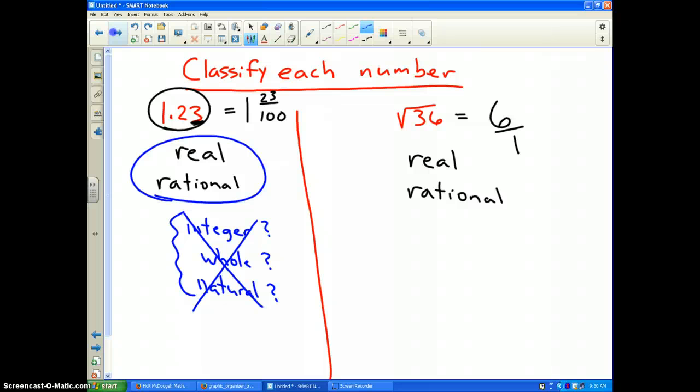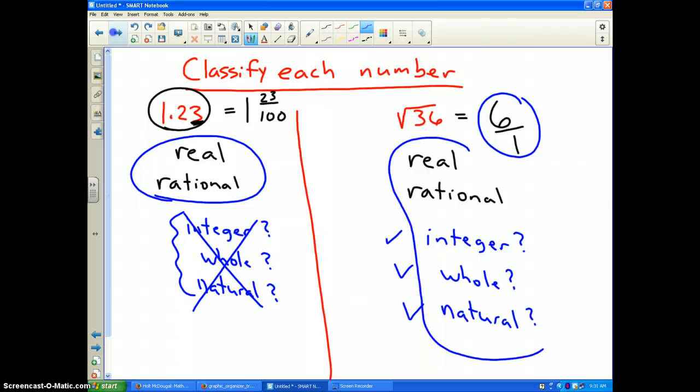Which brings us to the last question. Do any of the special categories apply? Is it an integer? Is it a whole number? Is it a natural number? Well, integers are counting numbers, both positive and negative. 6 is a counting number, so it is an integer. Can you order 6 whole pizzas? Sure you can, so it's a whole number. Is it natural? Well, of course, because natural numbers are all whole numbers. So therefore, this one is natural as well. Therefore, your final answer would be square root of 36 belongs to every one of those number systems: real, rational, integer, whole, and natural.